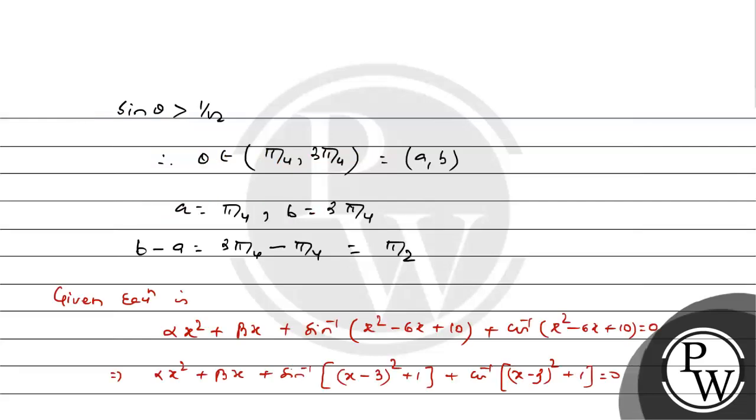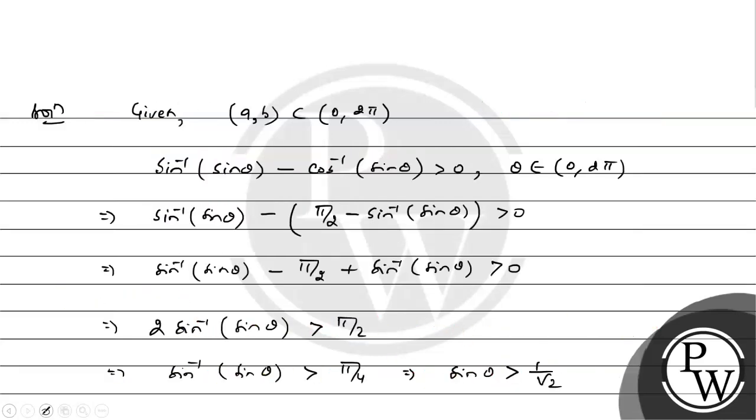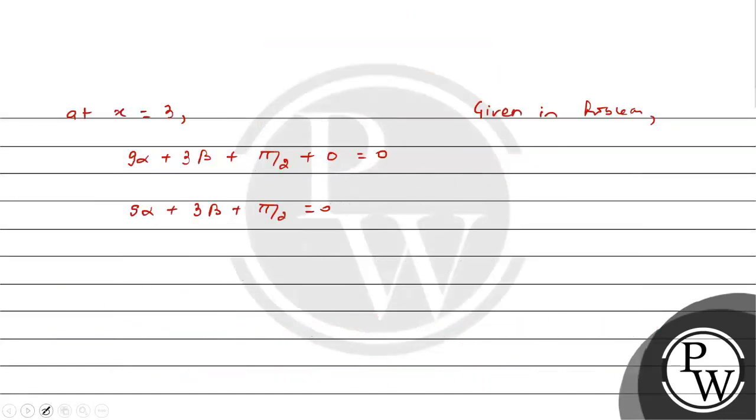We have b - a = π/2, given in problem α - β = b - a. We have two variables and one equation to convert. Because we have b - a is π/2, β can be written as α - π/2.